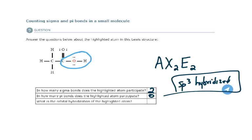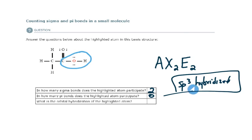This hybridization theory helps to explain the bond angles of these electron domains. It only works when we consider hybridization theory, so it helps our model make a little bit more sense.